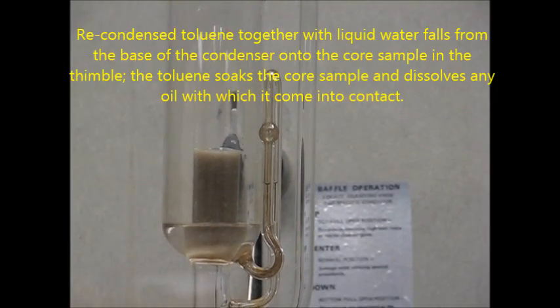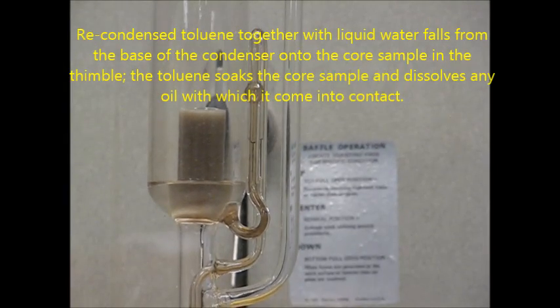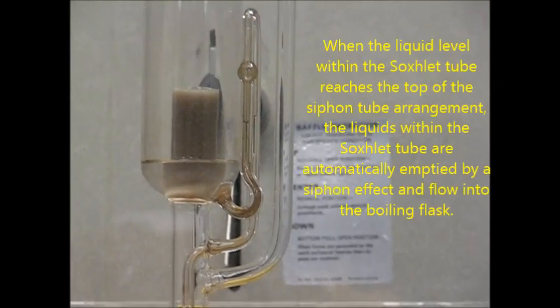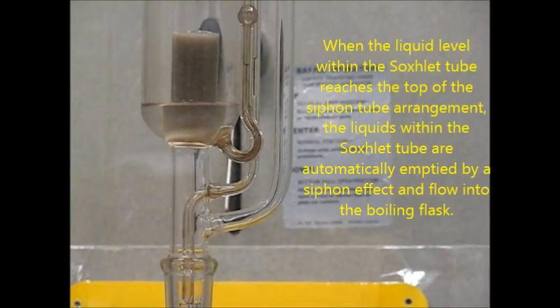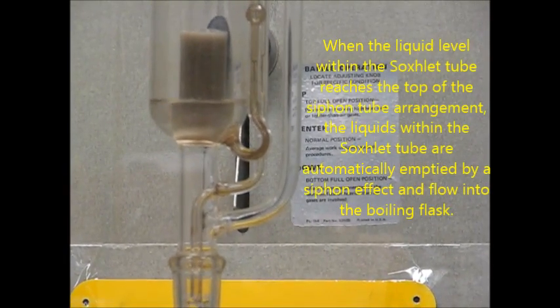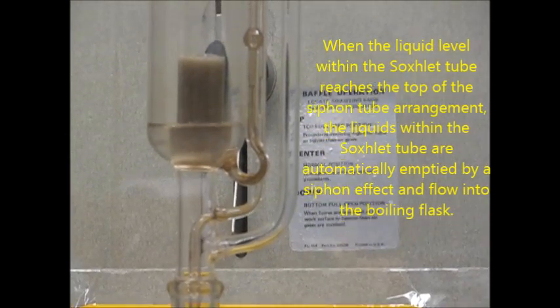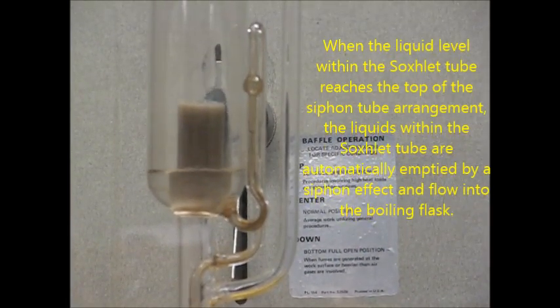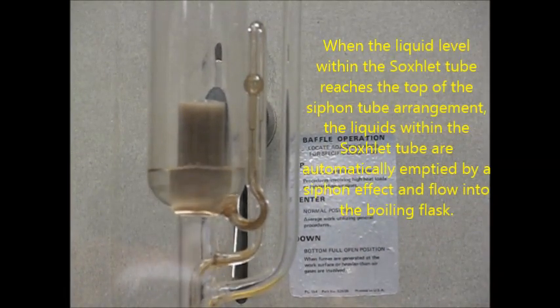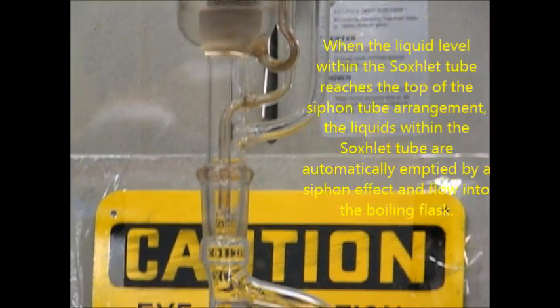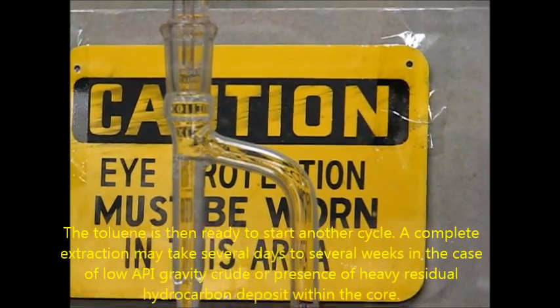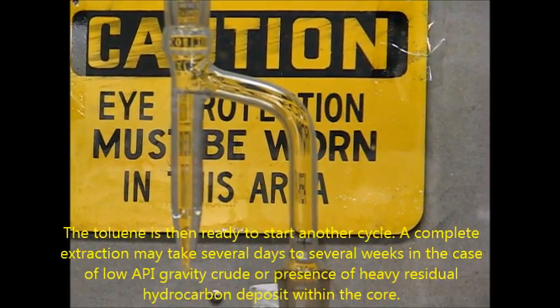The toluene soaks the core sample and dissolves any oil with which it comes into contact. When the liquid sample within the Soxhlet's tube reaches the top of the siphon tube arrangement, the liquids within the Soxhlet's tube are automatically emptied via a siphon effect and flow into the boiling flask. The toluene is then ready to start another cycle.